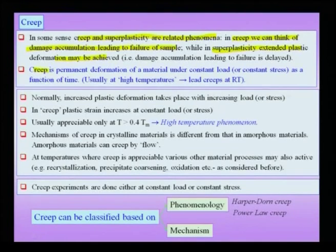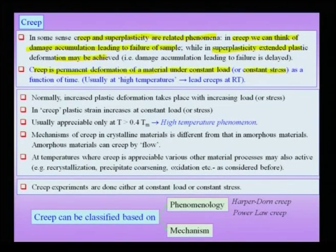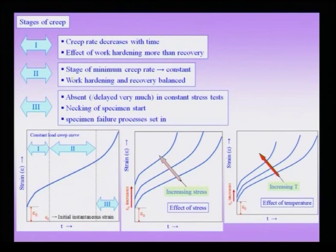Creep is permanent deformation of a material at constant load. In uniaxial tension, to cause further plastic deformation we need to increase the load. But in creep, the test is carried out at constant load or constant stress, and strain is progressively accumulated over time. A typical result of a creep experiment is a plot of time versus strain — a creep curve.